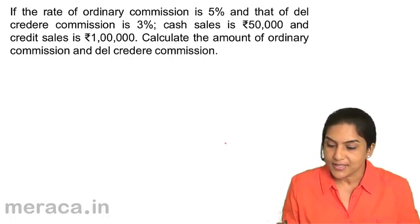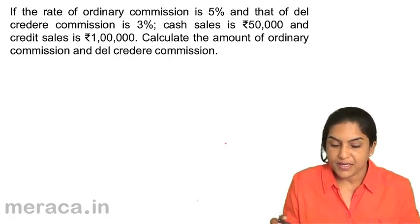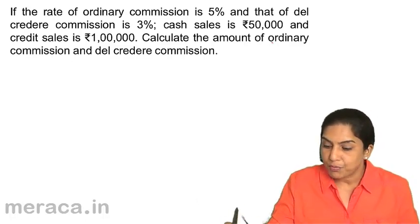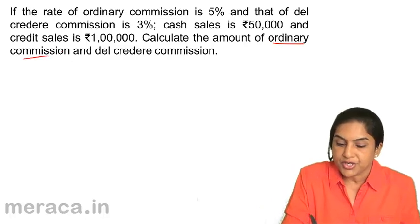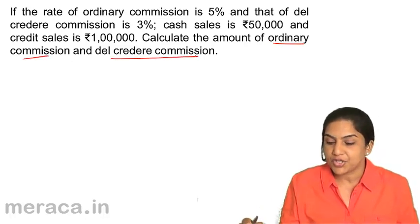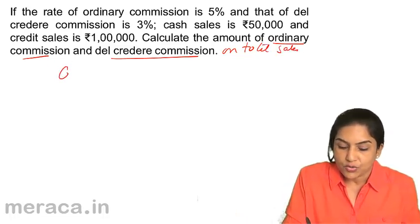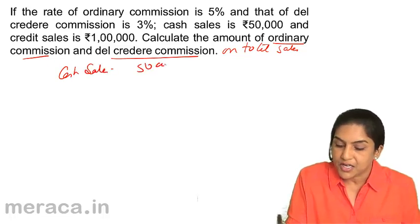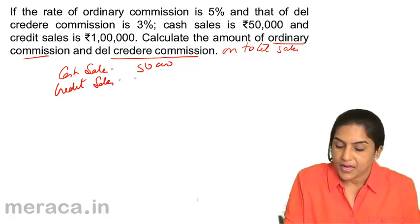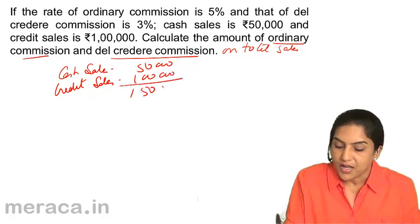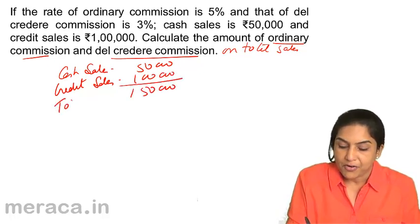So what is the sales? Mind you, if nothing is mentioned, both ordinary commission and Del Credere commission is computed on total sales. So what is the total sales? Cash sales is 50,000, credit sales is 1 lakh. So you have a total sale of 1,50,000.